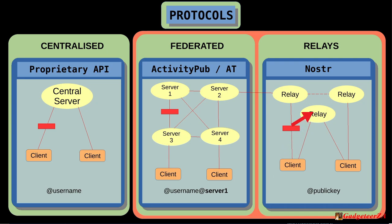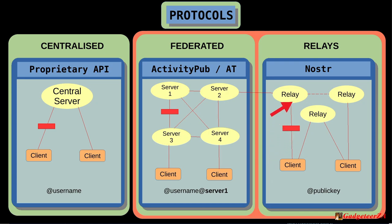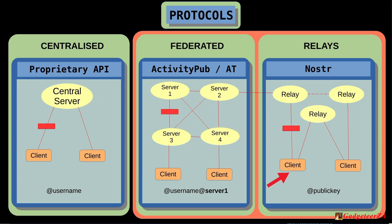When a client subscribes to someone's public ID and starts the app, it calls the relays it's connected to and filters for any posts from that public ID, then downloads them. If a relay does block you — which I haven't actually heard of really happening, but it can — you still have another 490-plus relays available, and potentially your own self-hosted relay. Your posts still go out to the other relays and other clients can still receive you.